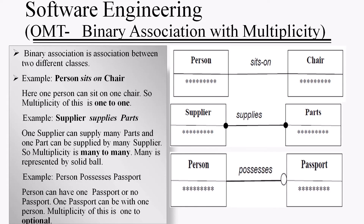A binary association with multiplicity: for example, one person sits on one chair, so multiplicity is one-to-one, shown in the first figure. The second example is supplier supplies parts: one supplier can supply many parts and one part can be supplied by many suppliers, so multiplicity is many-to-many. For many-to-many multiplicity, a solid ball is used on both the supplier side and the part side.